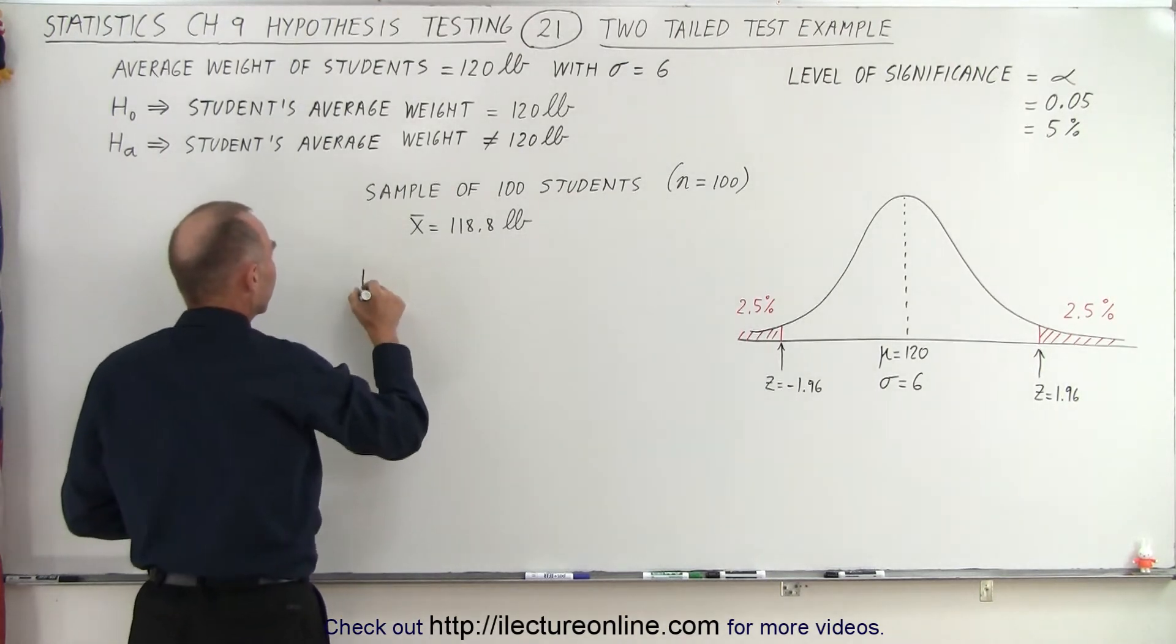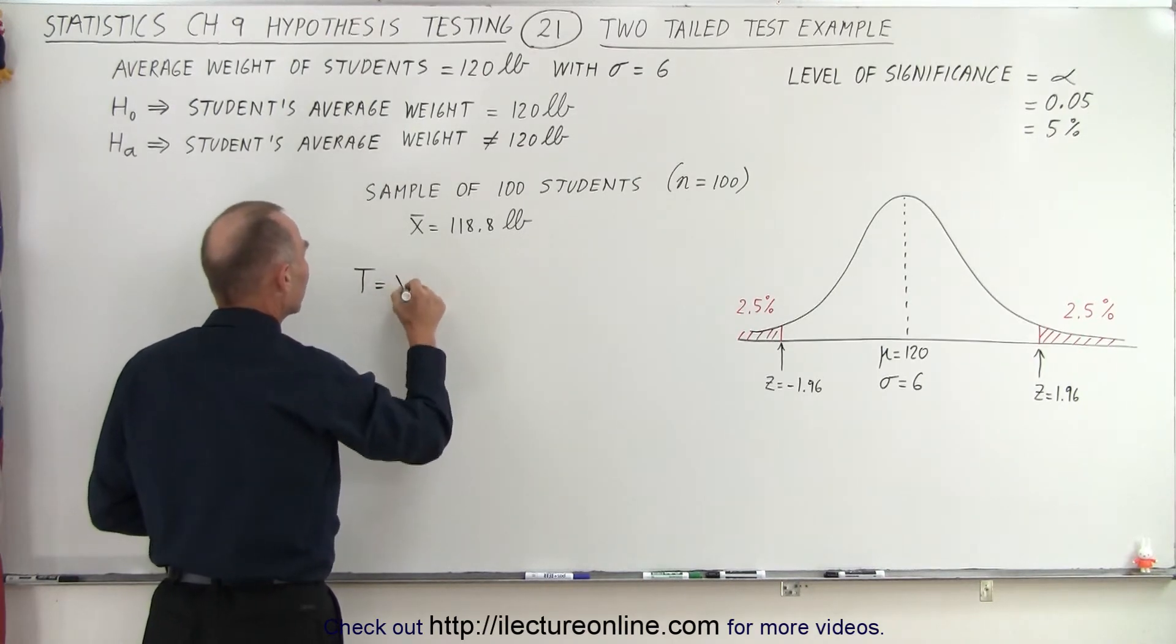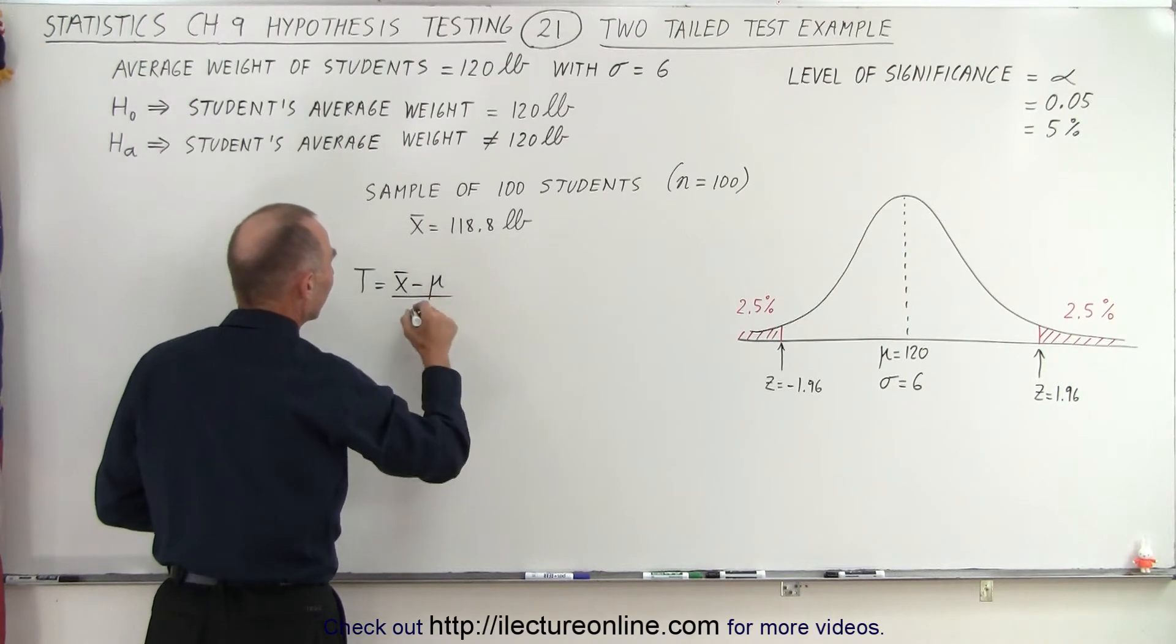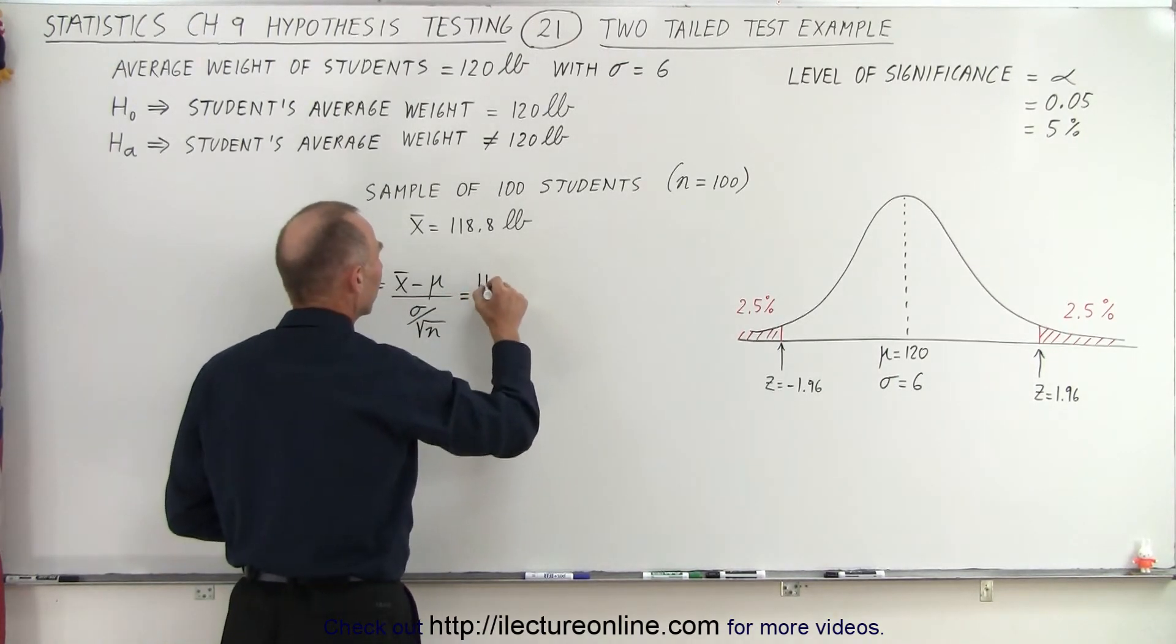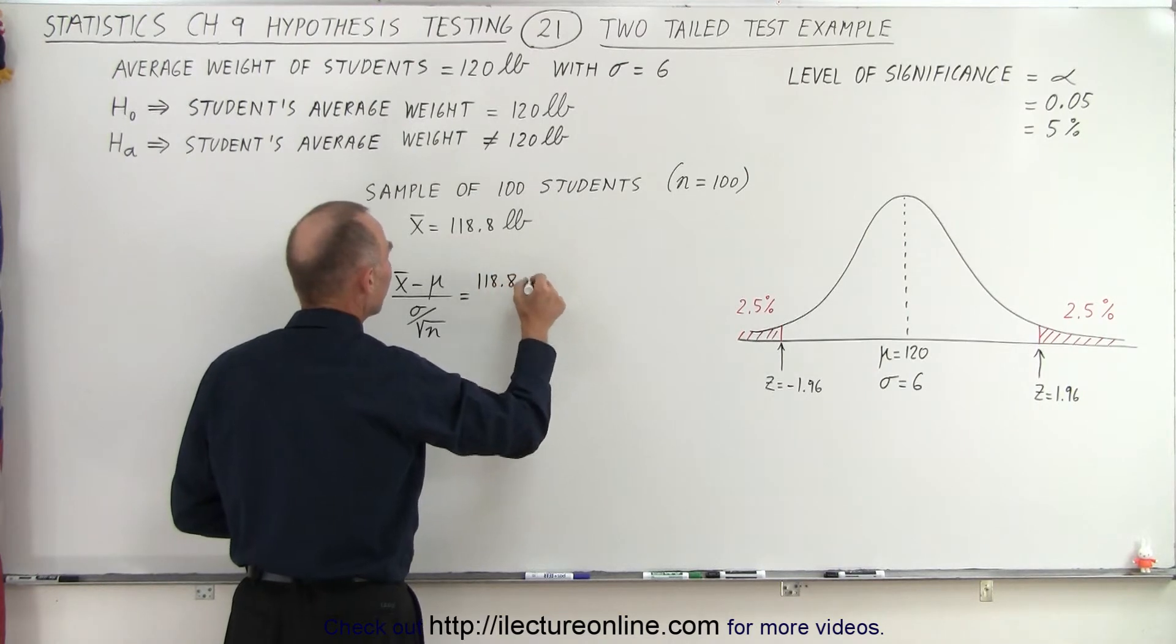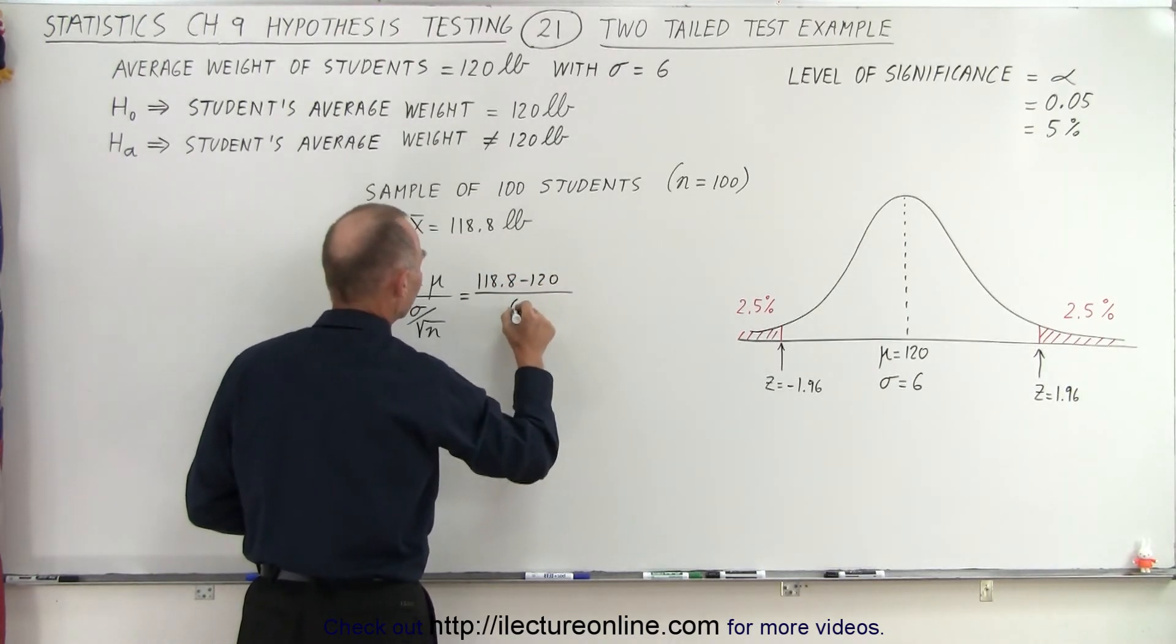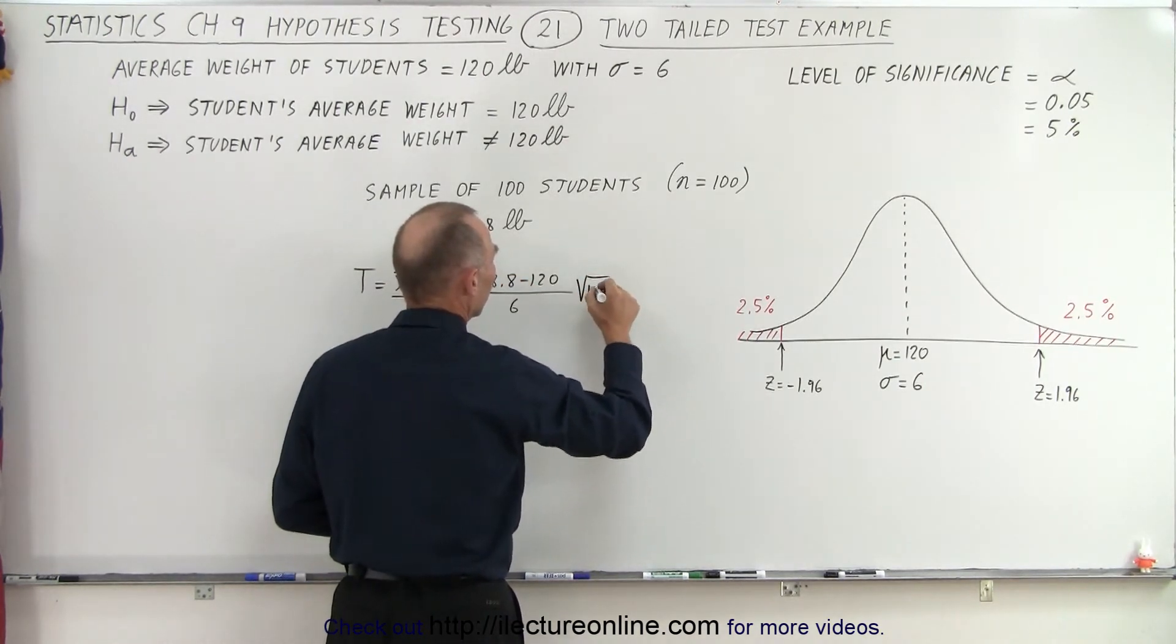So first of all we're going to calculate the test statistic. And so the test statistic is going to be equal to the mean of the sample minus the mean of the population divided by the standard deviation, which itself is divided by the square root of the sample size, which is n. So this becomes equal to 118.8 minus 120 divided by 6. And I'm going to move the square root of n to the right here, the square root of 100.